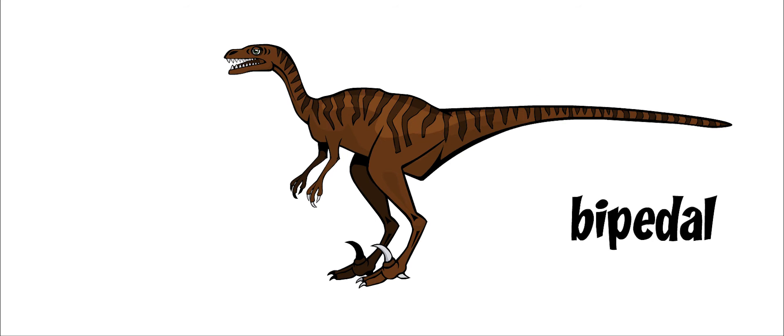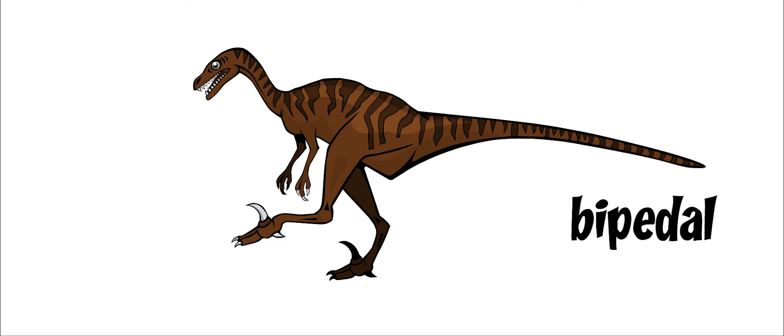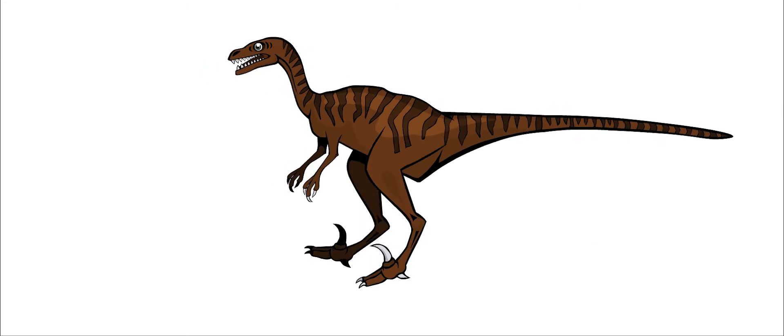Velociraptor was a bipedal dinosaur, meaning that it walked on two legs. Its legs were long and thin. It was small and light.